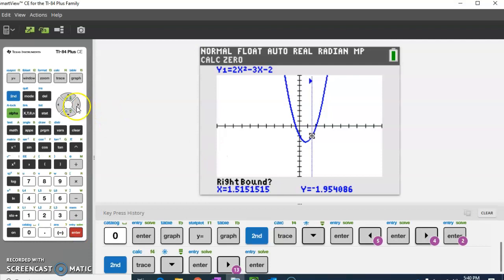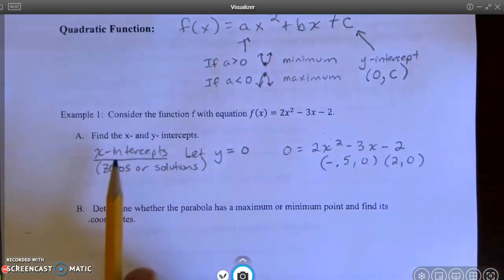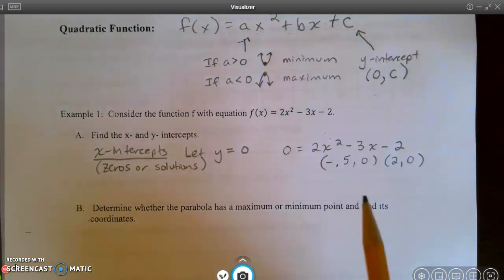Now I'm going to move to the right. And now I'm to the right and above. I hit enter. And I hit enter one more time. I don't want the guess. And I get 2.0. So I'm going to put that answer now on my paper. So 2.0 is my other x-intercept or zero or solution.